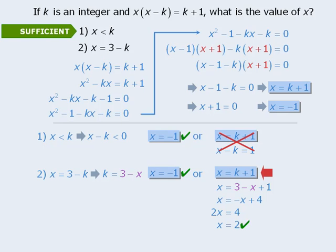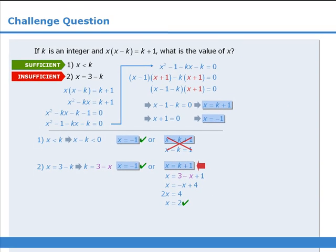So 2 is one possible value for x, and we already know that negative 1 is another possible value for x. So since we cannot determine the value of x with any certainty, statement 2 is not sufficient, which means the answer here is A.